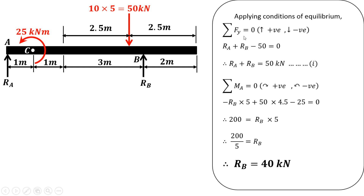Now we will apply the conditions of equilibrium. The first condition is summation of forces in the y direction equals 0, with upward forces positive and downward forces negative. RA and RB are acting upward so they are positive, whereas the point load of 50 kN acts downward so it is negative. Therefore, RA plus RB equals 50 kN — let us call this Equation 1.